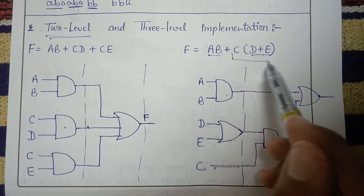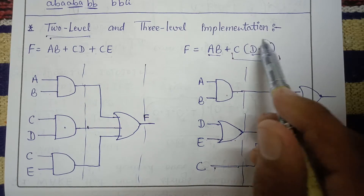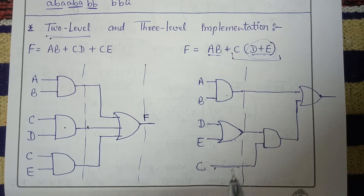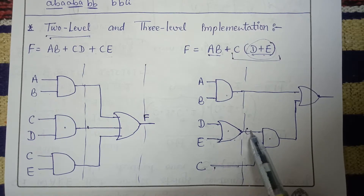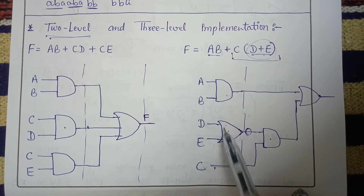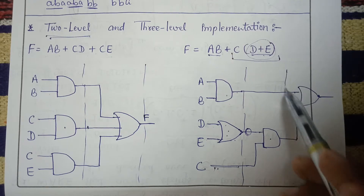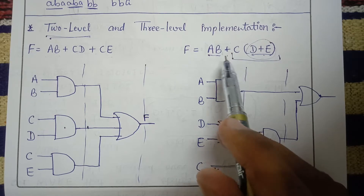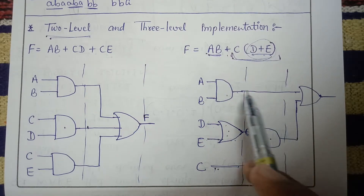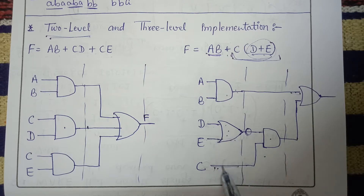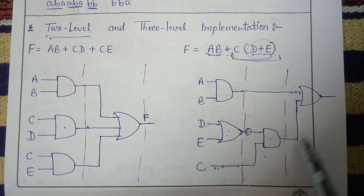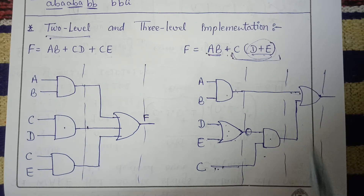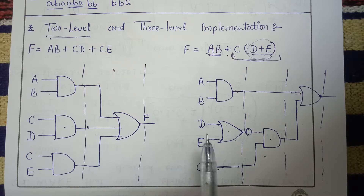In the second level, we perform c AND (d OR e). So in the second level we perform the AND operation on c and the result of d OR e. Then in the third level, we OR together ab and the whole term c(d+e). That is why this implementation is called three-level implementation.